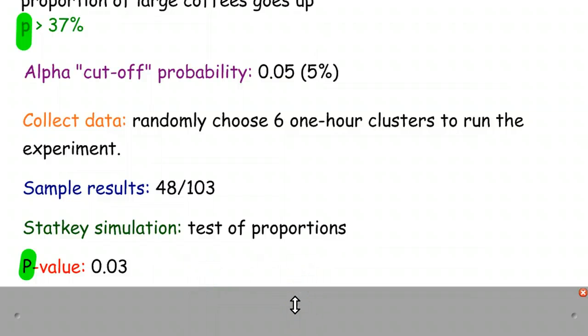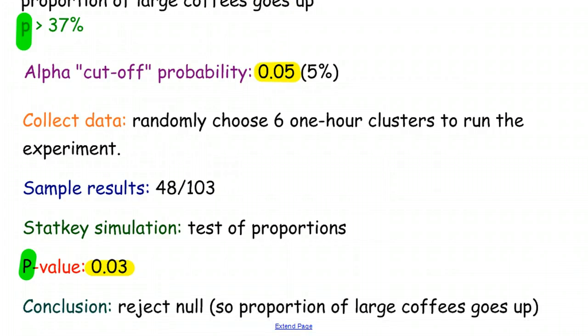Now we have to decide what to do with that. The thing that we do is we compare that number to the cutoff value, that alpha value, that probability that we picked ahead of time. We said that 5% was unlikely enough to be convinced that the null probably wasn't true. We got 0.03. That's less than 0.05. That means that we are reasonably convinced that the null hypothesis is not true. So we are going to reject the null hypothesis.